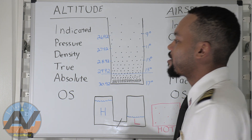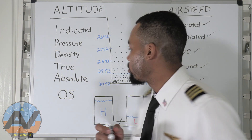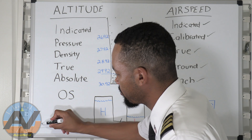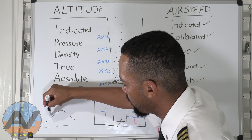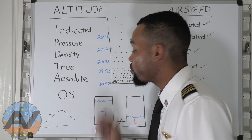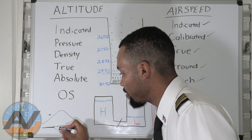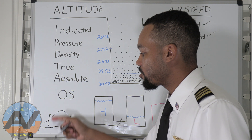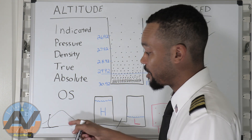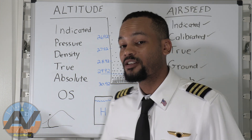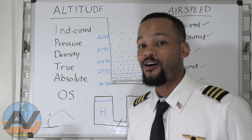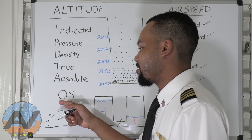True altitude is the altitude above mean sea level. For example, here's mean sea level and here's a mountain — if you're flying just 10 feet over the mountain, your true altitude might be 1,000 feet above sea level. Absolute altitude is literally AGL — above ground level. A for absolute, A for AGL. This is the altitude above the ground that you're flying over.